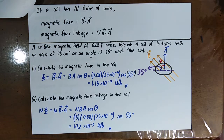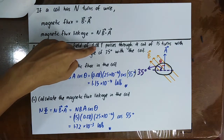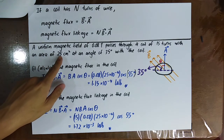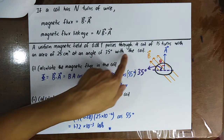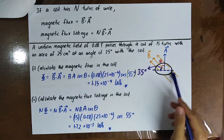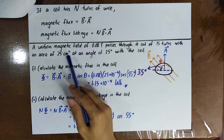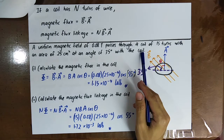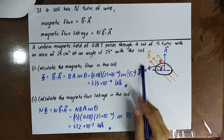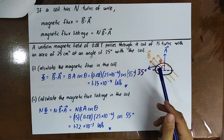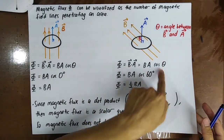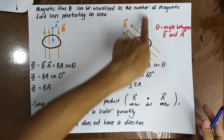Let's do a question. A uniform magnetic field of 0.08 Tesla passes through a coil of 15 turns with an area of 25 cm squared at an angle of 35 degrees with the coil. Calculate the magnetic flux in the coil. The angle between the coil and B is 35 degrees. Remember that B dot A equals B A cos theta, where theta is the angle between B and the area vector.